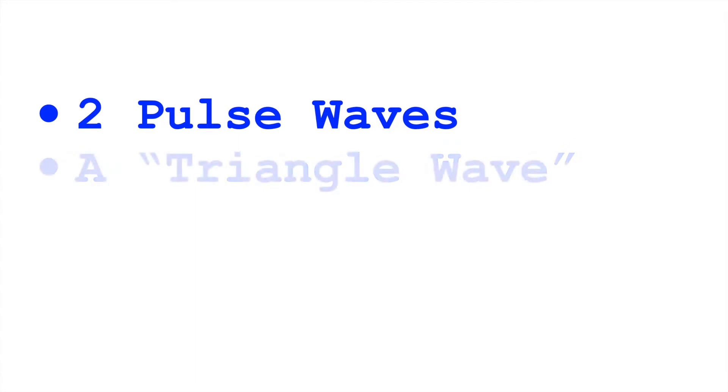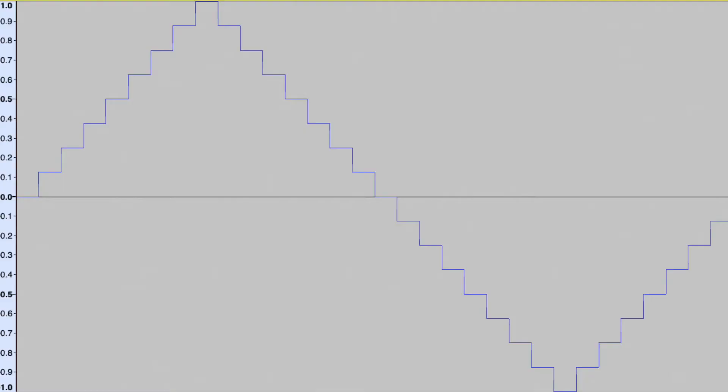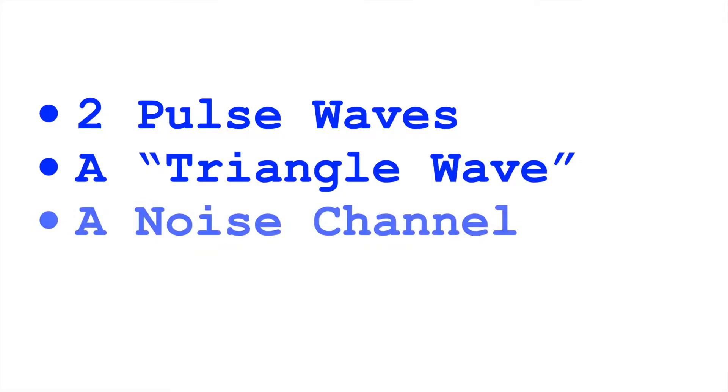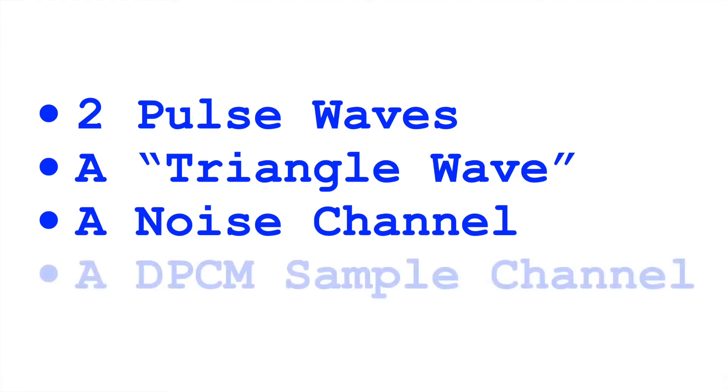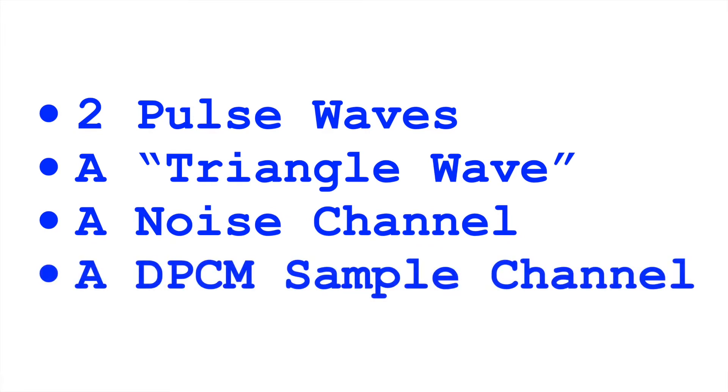The five channels consist of two pulse waves with adjustable pulse width, a triangle wave that's not quite a perfect triangle wave, a noise channel, and a channel that could actually play samples.